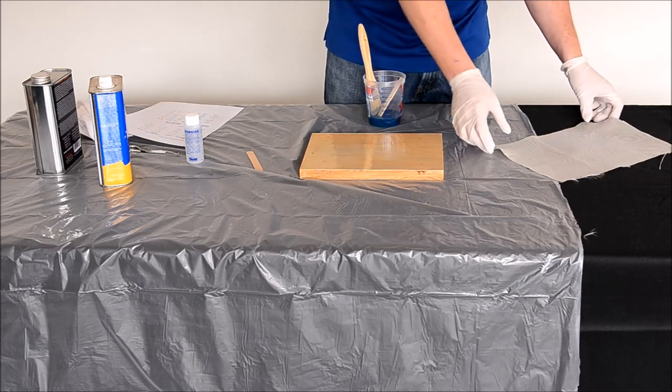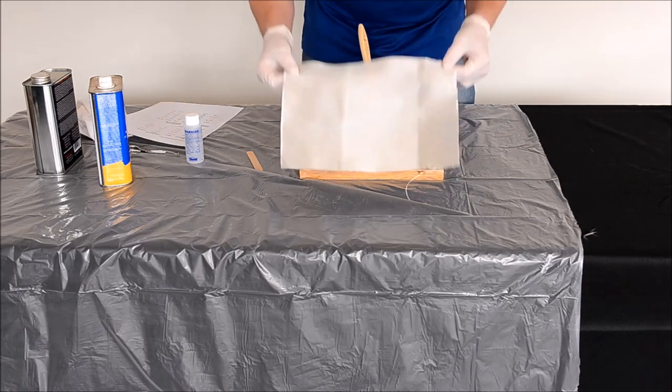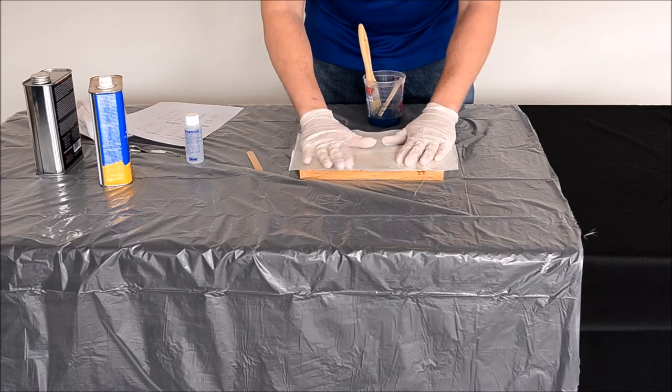Once you have applied the thin layer of resin to the plywood, place your fiberglass cloth onto it and allow the resin to soak into the cloth.